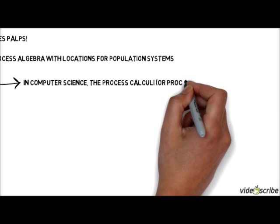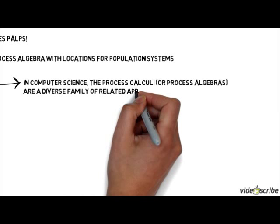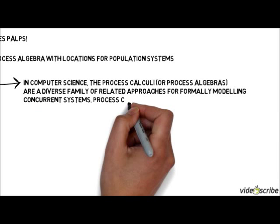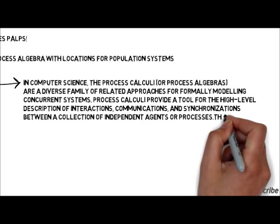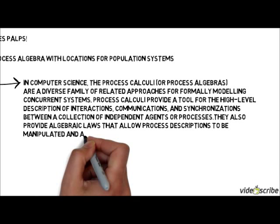In computer science, the process calculi or process algebras are a diverse family of related approaches for formally modeling concurrent systems. Process calculi provide a tool for the high-level description of interactions, communications, and synchronizations between a collection of independent agents or processes. They also provide algebraic laws that allow process descriptions to be manipulated and analyzed, and permit formal reasoning about equivalences between processes.